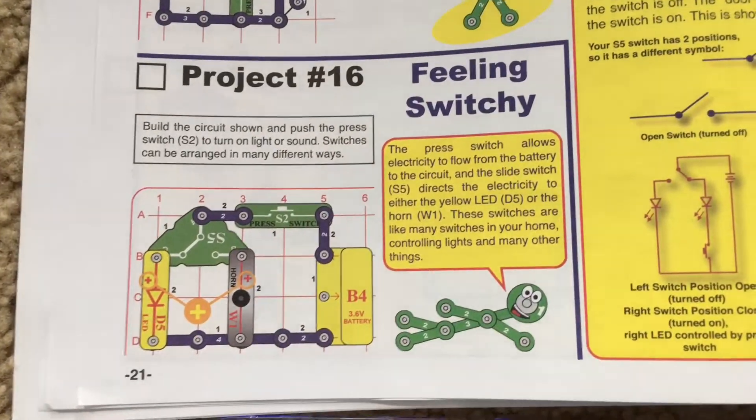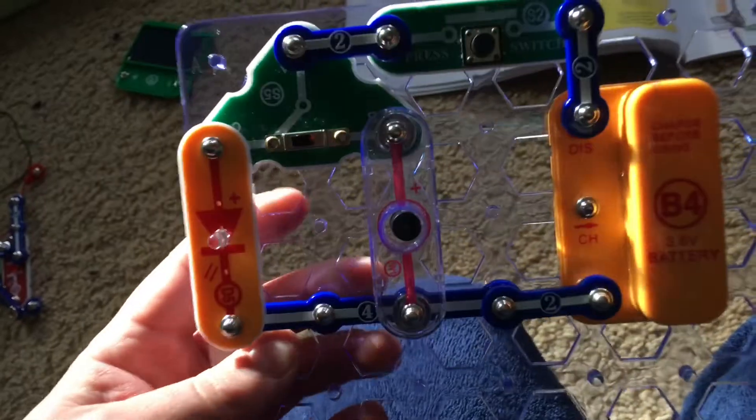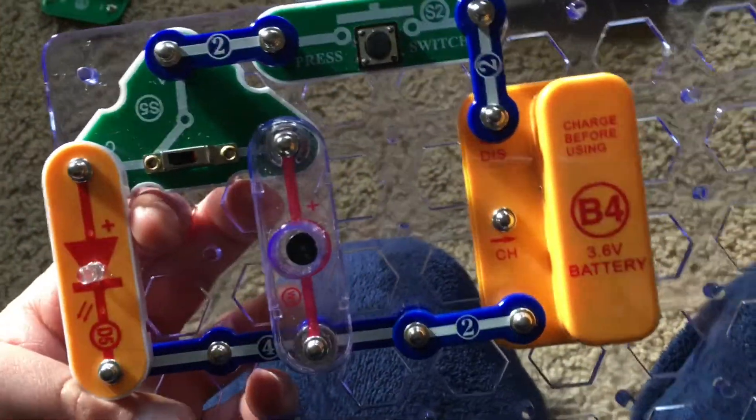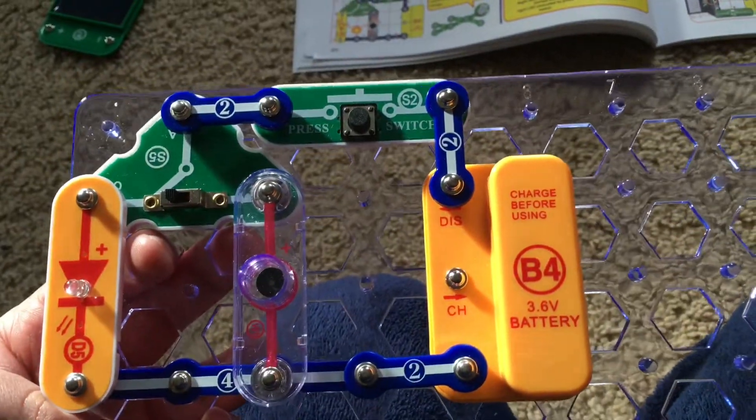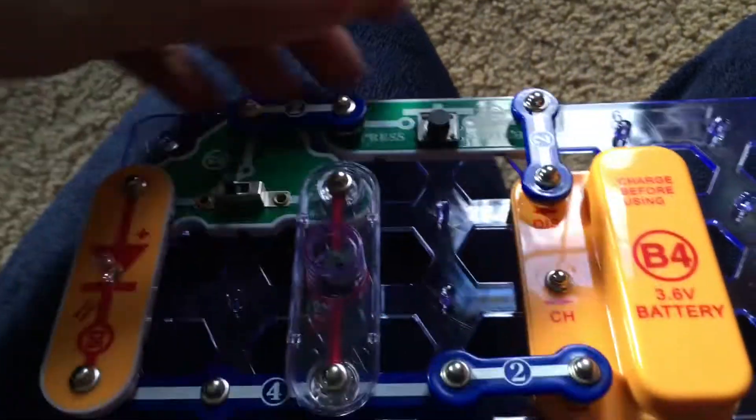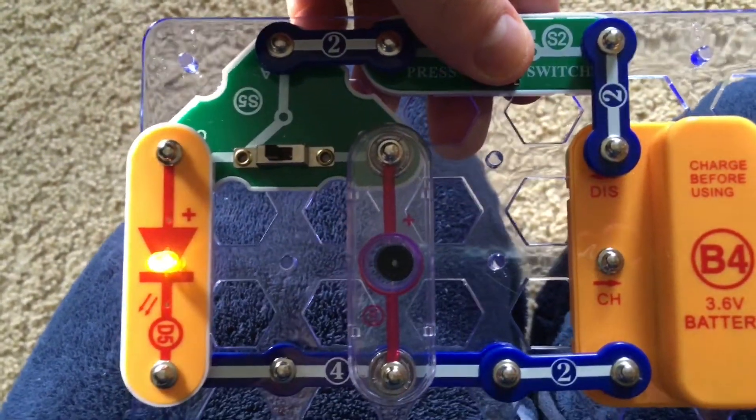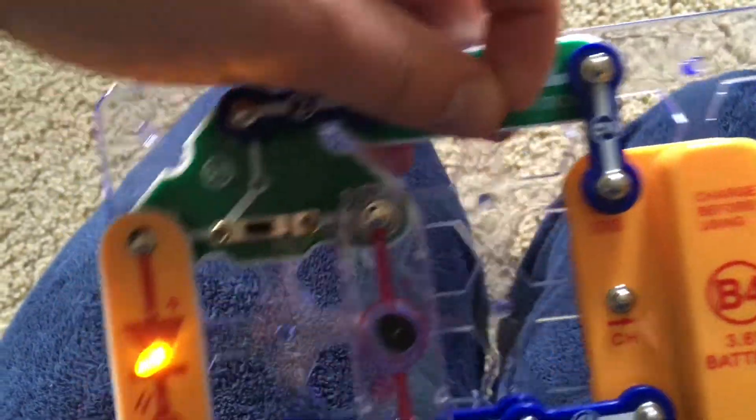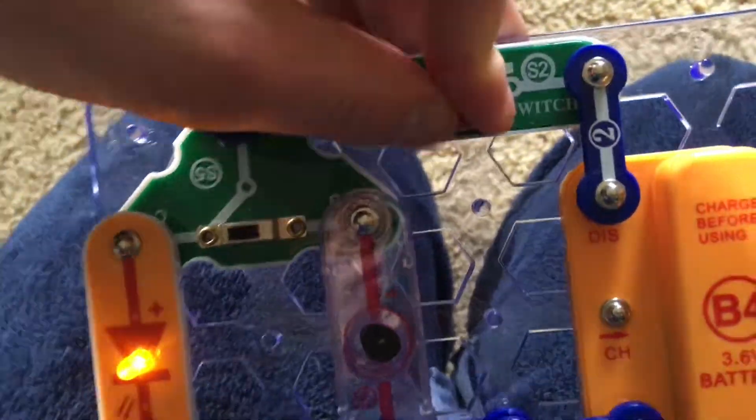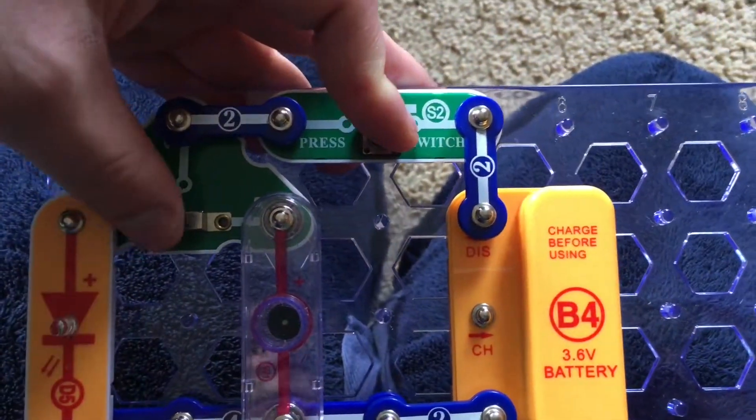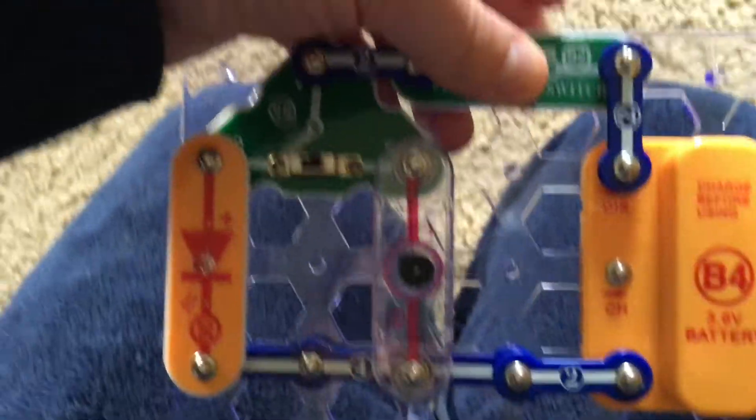Project 16, feeling switchy. We'll use this simpler circuit, which still includes both switches. We have the yellow LED and horn, and we will hold down the press switch and the yellow LED lights. But when I move the slide switch to the right, volume warning, loud horn. The horn comes on, but the yellow LED turns off.